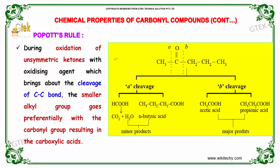Popoff's Rule: During oxidation of unsymmetric ketones with oxidizing agents which bring about the cleavage of the carbon-carbon bond, the smaller alkyl group goes preferentially with the carbonyl group, resulting in the carboxylic acid. We can see here the A cleavage and B cleavage of this carbonyl group producing the minor product, which is n-butyric acid, whereas the major product is acetic acid along with propanoic acid.